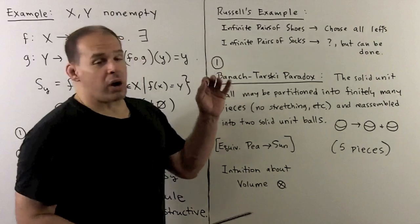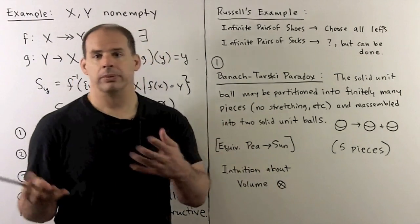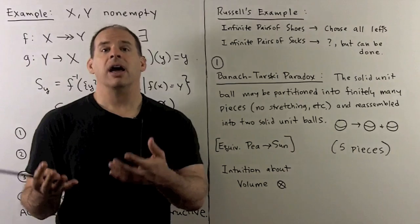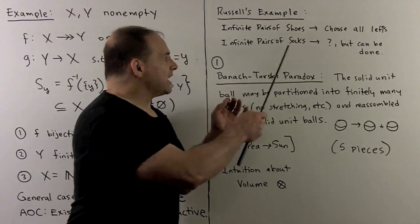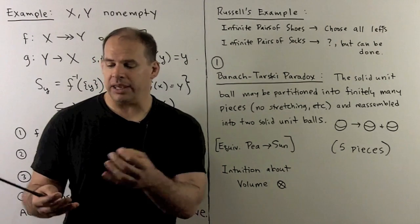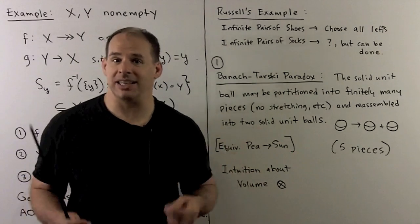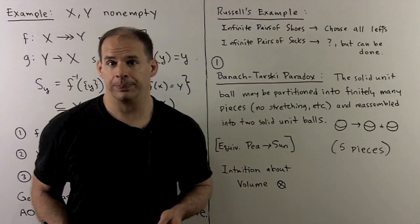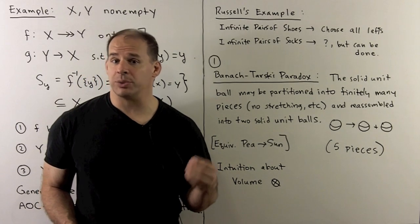For instance, with Russell's example: if I have an infinite pair of shoes, in this case I get a rule just by picking all left shoes. If I had an infinite number of pairs of socks, assuming we can't tell left and right, we can't make those choices because we have an infinite set, so we have to appeal to the axiom of choice.